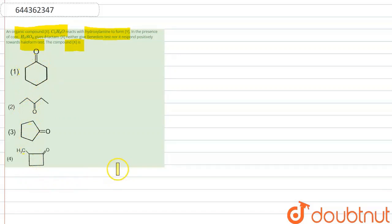Let me firstly write down the structure. It is given to us C5H8O, so this is your compound X with its molecular formula. Now firstly this compound reacts with hydroxylamine. Hydroxylamine is NH2OH and forms a compound Y. This compound Y in presence of concentrated H2SO4 forms a lactam.